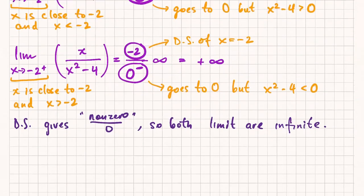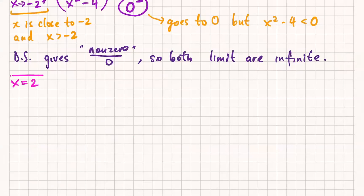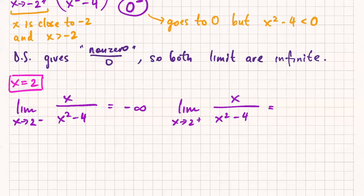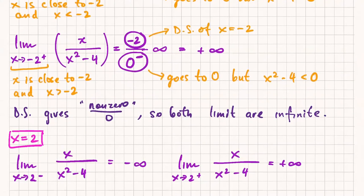I'll leave x equals 2 up to you — it's done very similarly. It turns out we again get negative infinity and positive infinity for the left and right limits. Don't think that the infinities are always going to be opposite. They don't have to be. You can get different infinities on the two sides, or the same infinity on both sides.